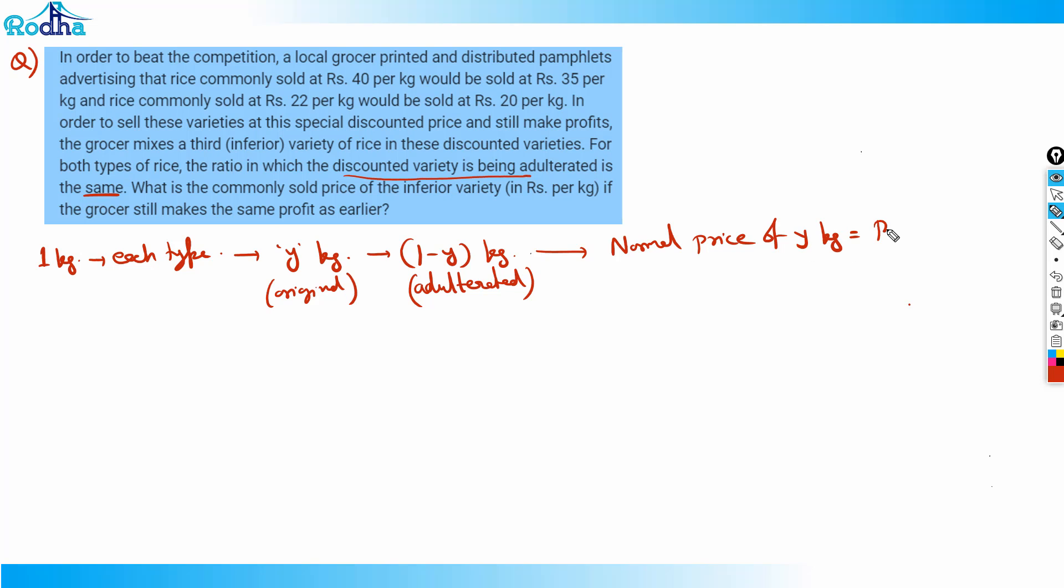We don't know the normal price of the adulterated rice. So the normal price of 1 minus y kg of rice, I'll assume to be Rs. p.